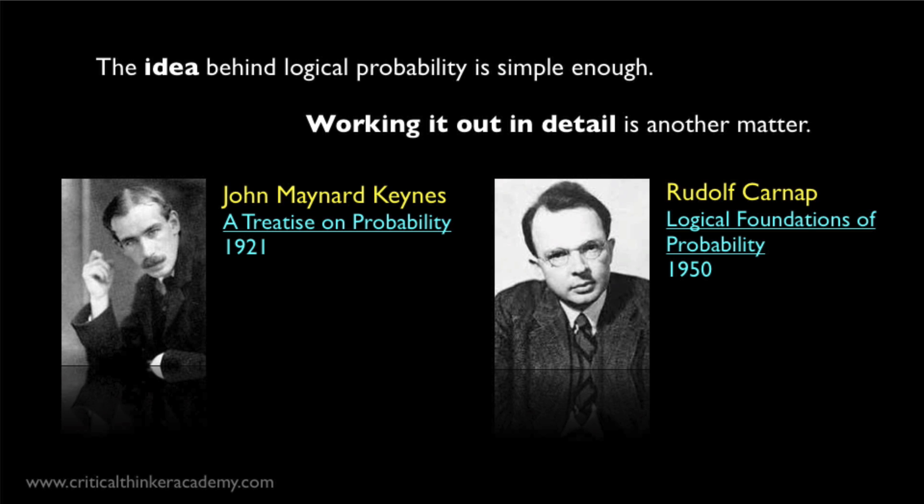The difficulty of the problem arises in part from the desire to have a genuinely logical definition of partial entailment, or degree of confirmation. That means that this relation should only depend on logical features of the world, or more accurately, logical properties of our descriptions of the world. So for example, it shouldn't depend on specific knowledge we may have about the particular world that we find ourselves in. It should be independent of that kind of substantive empirical knowledge.